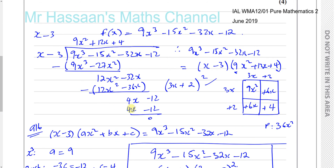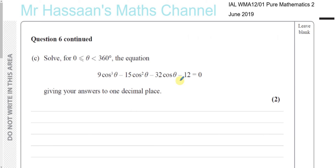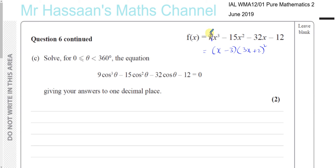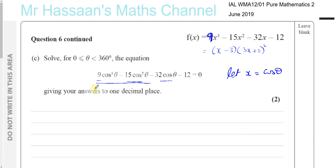Now for part C. This equation looks quite complicated but is only worth two marks. When you have a question like this as part of a larger question, look back at the previous parts. You'll see that this is 9 of something cubed minus 15 of something squared minus 32 of that something minus 12. If we let X equal cosine theta, this becomes 9X cubed minus 15X squared minus 32X minus 12 equals zero.